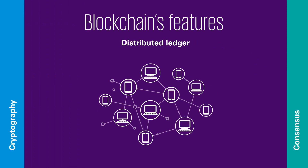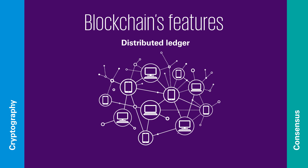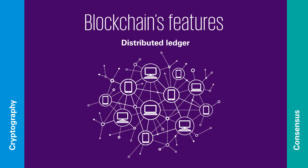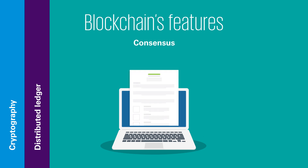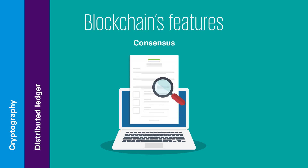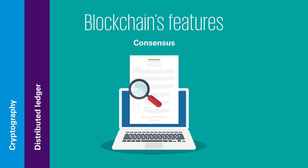Instead of relying on a central authority to manage the ledger, blockchains use a distributed peer-to-peer network. Each user on the network is called a node, and each node maintains a copy of the entire blockchain history as well as the rules that govern the blockchain.